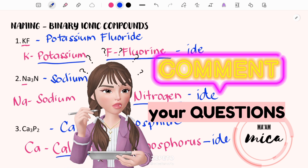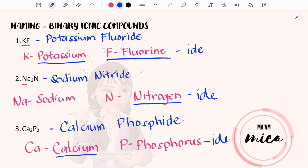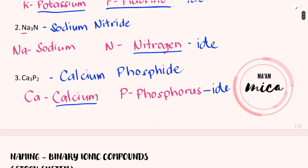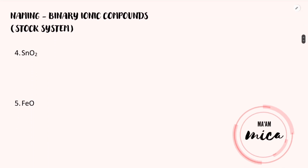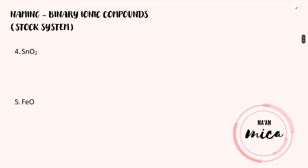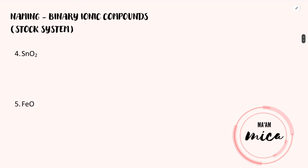Before I proceed with our next example, if you have questions, just type them in our comment section. In our next example, we are going to use the stock system. We use the stock system to name compounds that involve transition metal cations with more than one charge. The name of the compound must reflect the charge being used in the chemical formula.